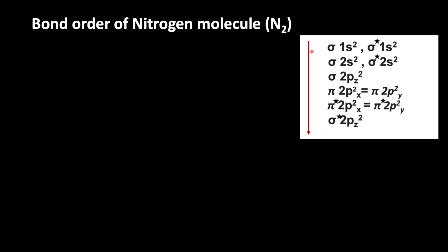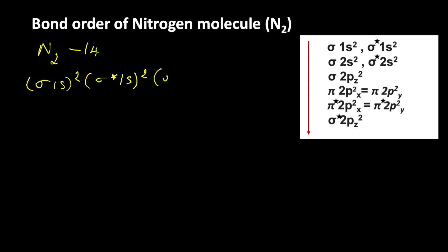Based on this information, let us write the electronic configuration of nitrogen molecule: sigma 1s², sigma star 1s², sigma 2s², and sigma star 2s².